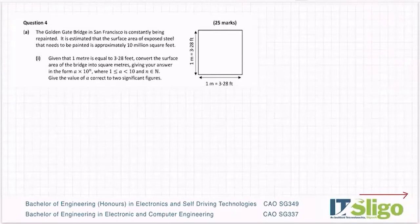The Golden Gate Bridge in San Francisco is constantly being repainted. It is estimated that the surface area of exposed steel that needs to be painted is approximately 10 million square feet. Given that one metre is equal to 3.28 feet, convert the surface area of the bridge into square metres. Give your answer in the form a by 10 to the n where one is less than or equal to a is less than 10 and n is an element of N. So this is scientific notation.